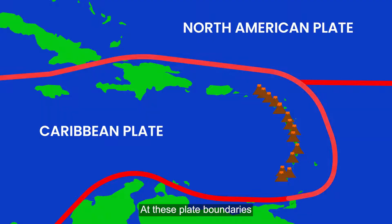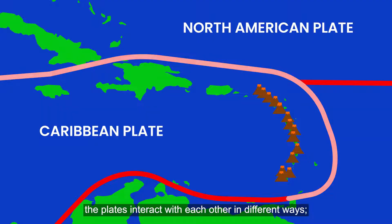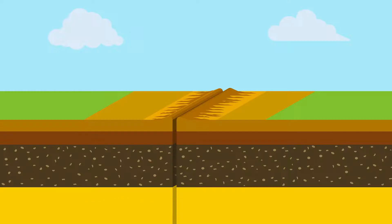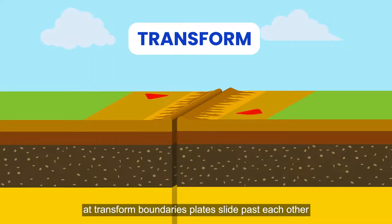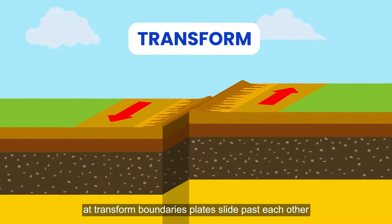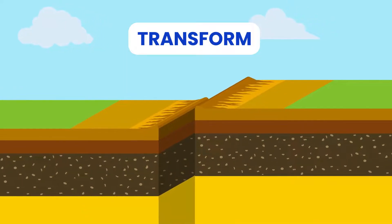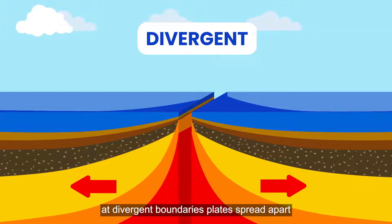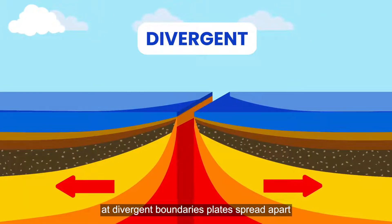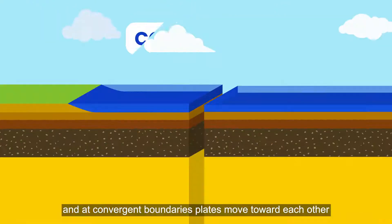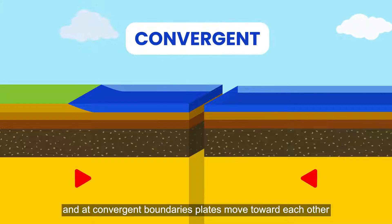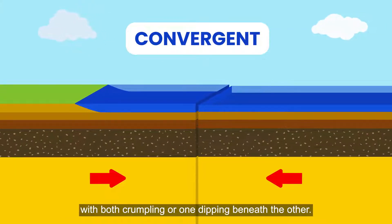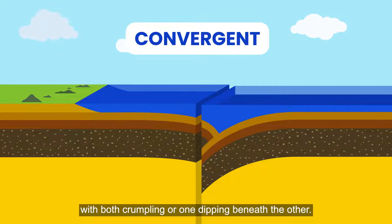At these plate boundaries, the plates interact with each other in different ways. At transform boundaries, plates slide past each other. At divergent boundaries, plates spread apart. At convergent boundaries, plates move toward each other, with both crumpling or one dipping beneath the other.